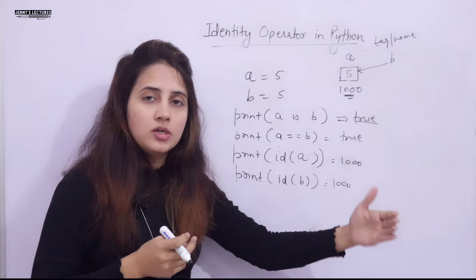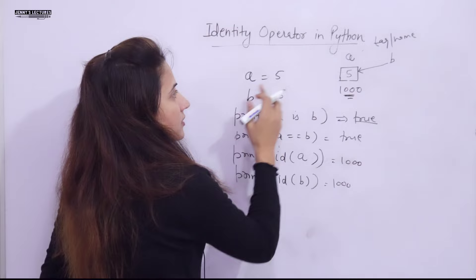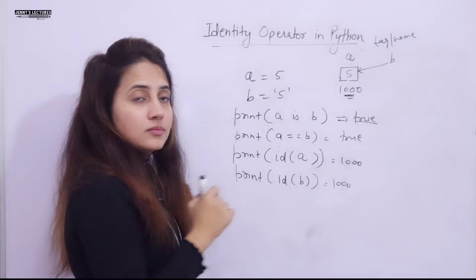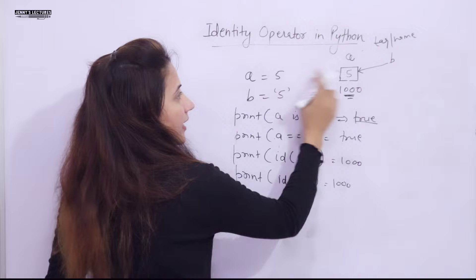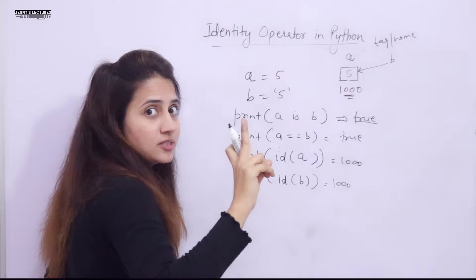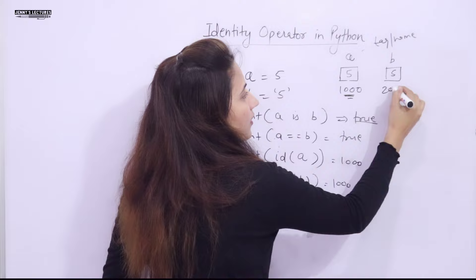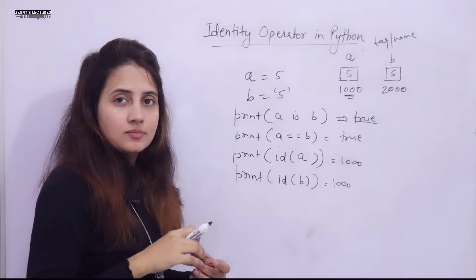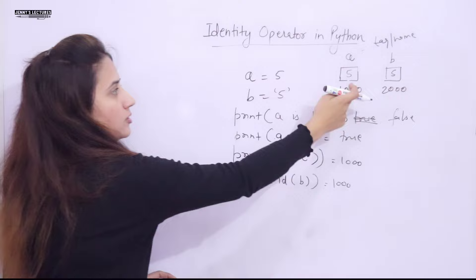Now if I write `a = '5'` as a string and `b = 5` as an integer, the data types are different. So at this point Python will create a separate object for the string '5' at a different address, say 2000. If you now print `a is b`, it will return False because the memory addresses of these objects are not the same.